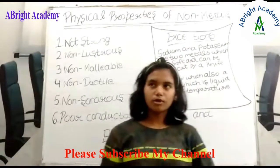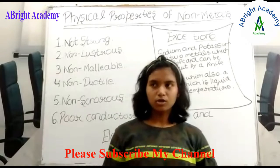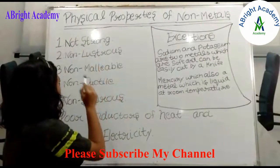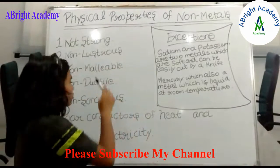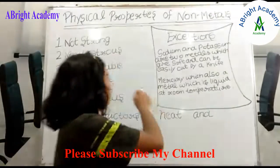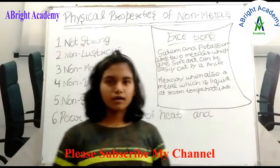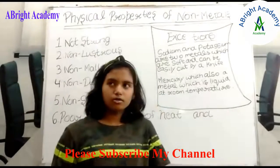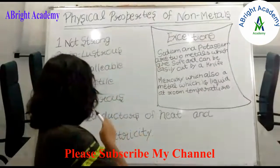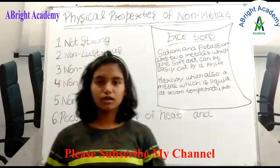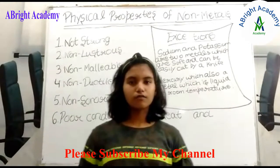Let's come to the physical properties of non-metals. The physical properties of non-metals are exactly the opposite of the physical properties of metals. Metals are strong but non-metals are not strong. Non-metals have no shine. Third, they are non-malleable, meaning they don't have the property of malleability which is present in metals. And since they are non-malleable, they also don't have the property of ductility. They also don't have the sonorous property. And last, they are bad conductors of heat and electricity.